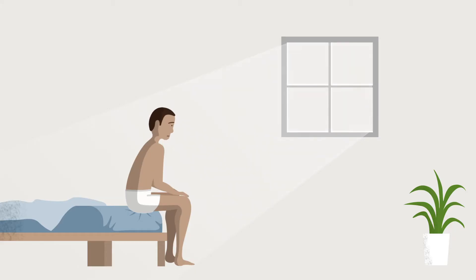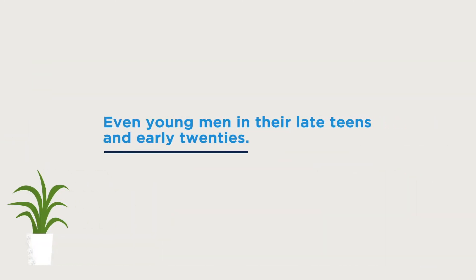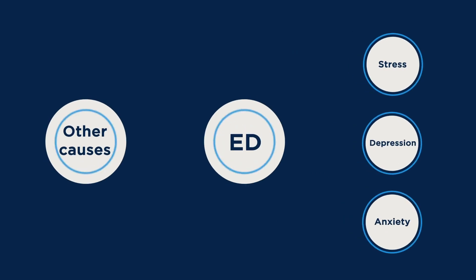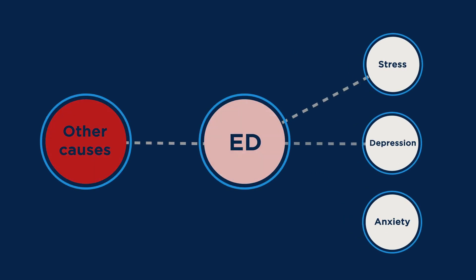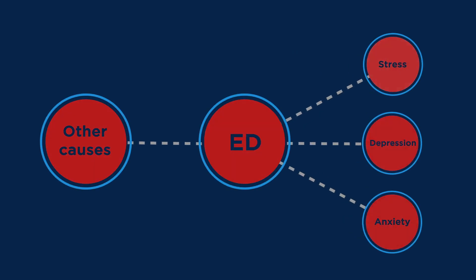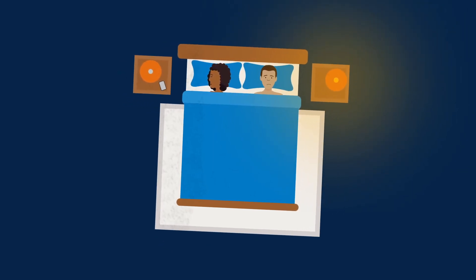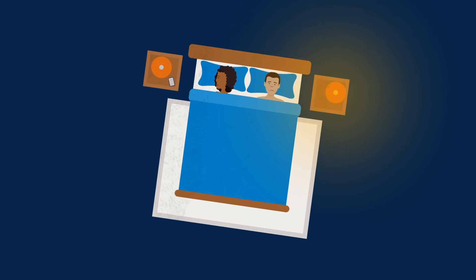But ED is increasingly affecting men for mental health reasons, even young men in their late teens and early 20s. Sometimes ED may happen because you feel stressed, anxious or depressed. Even if ED is caused by something else, having it may bring on mental health issues like these. And sometimes these worries can lead to a downward spiral. The more you worry, the worse the ED problem becomes.